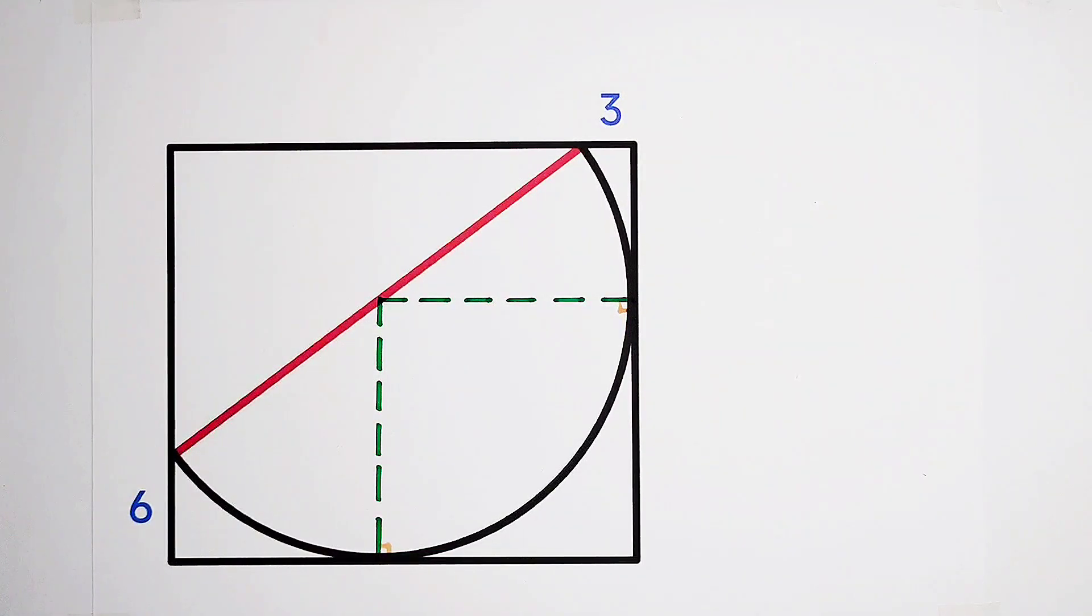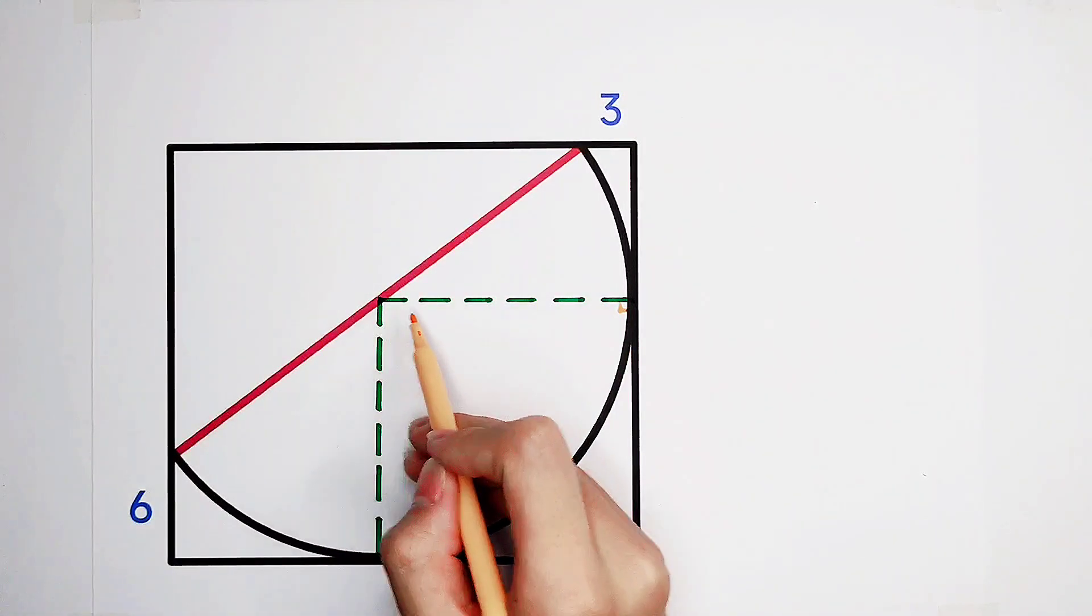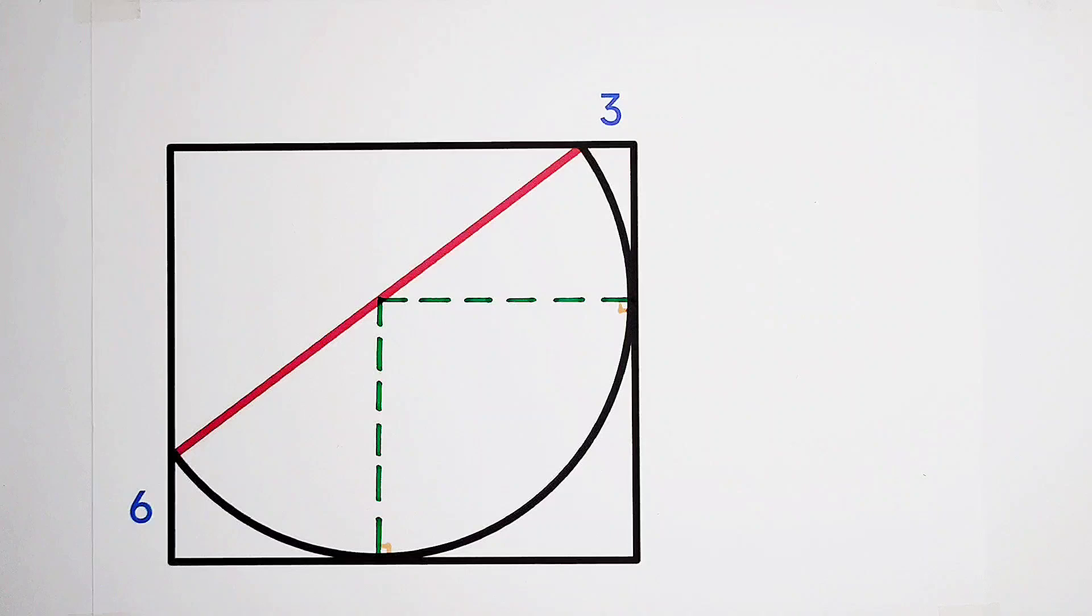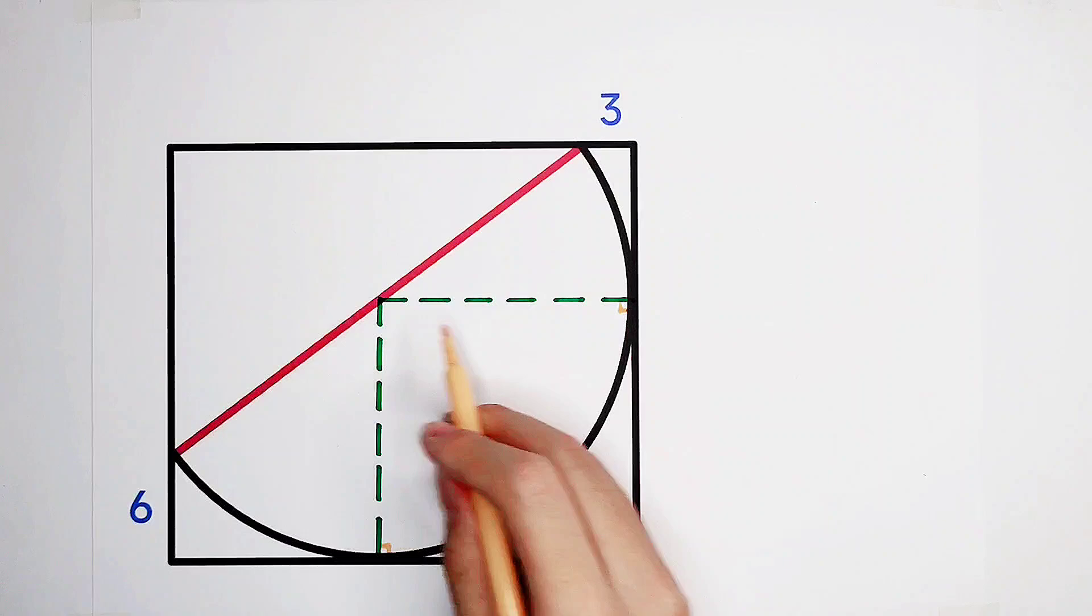Now, I have a question. What is this figure? Look! Here is, of course, a right angle. Why? Because this is a rectangle. Right angle, right angle, right angle. So here is also a right angle. So this figure is a rectangle.